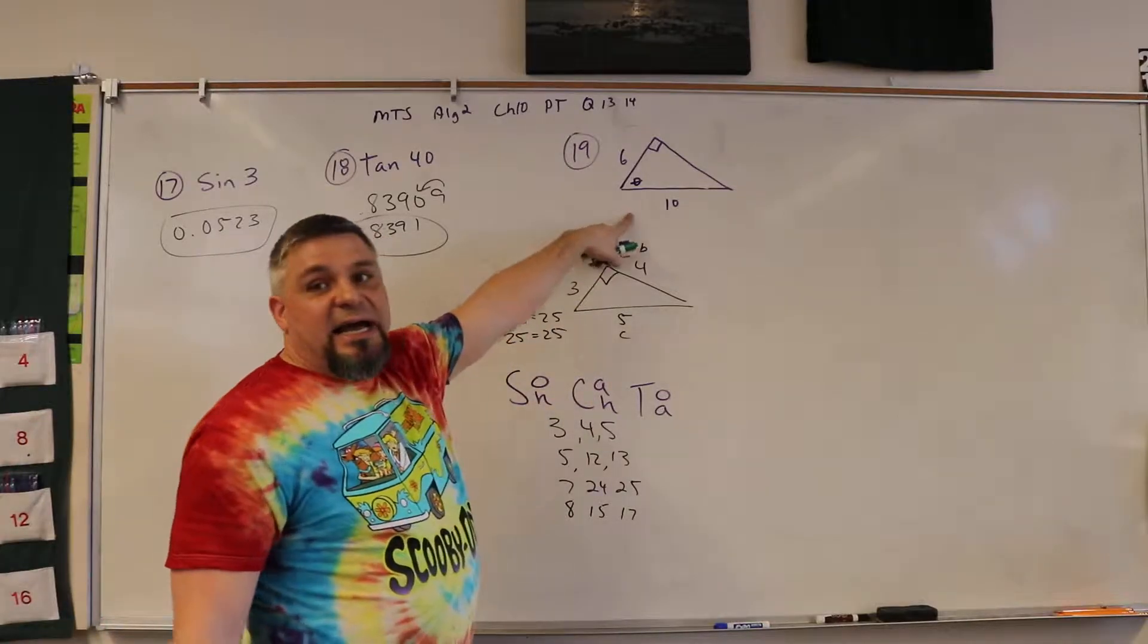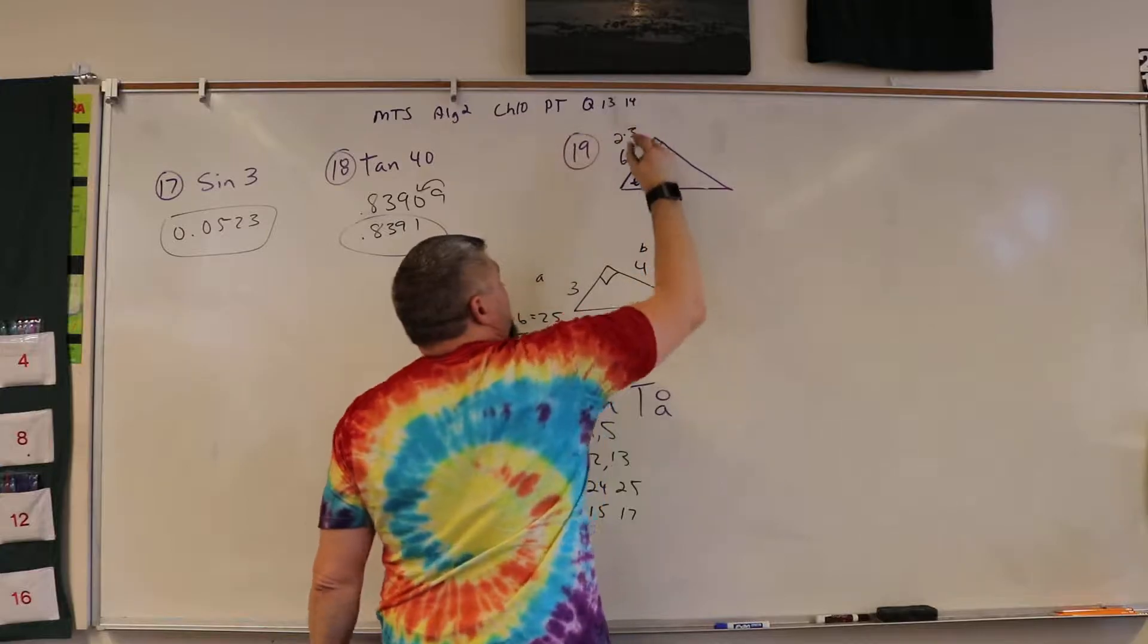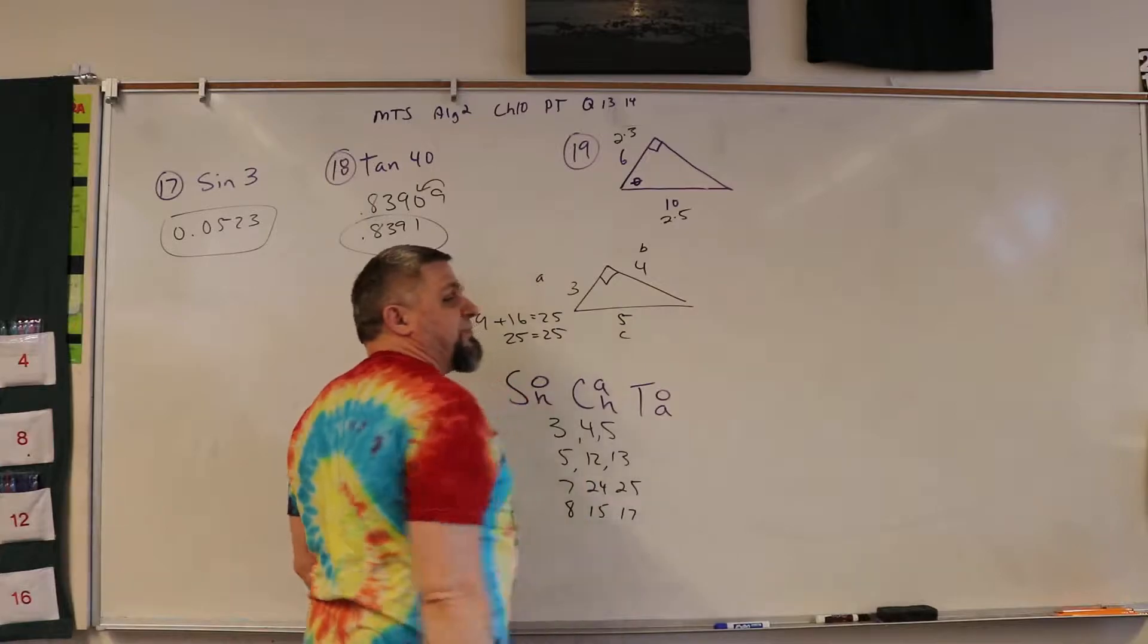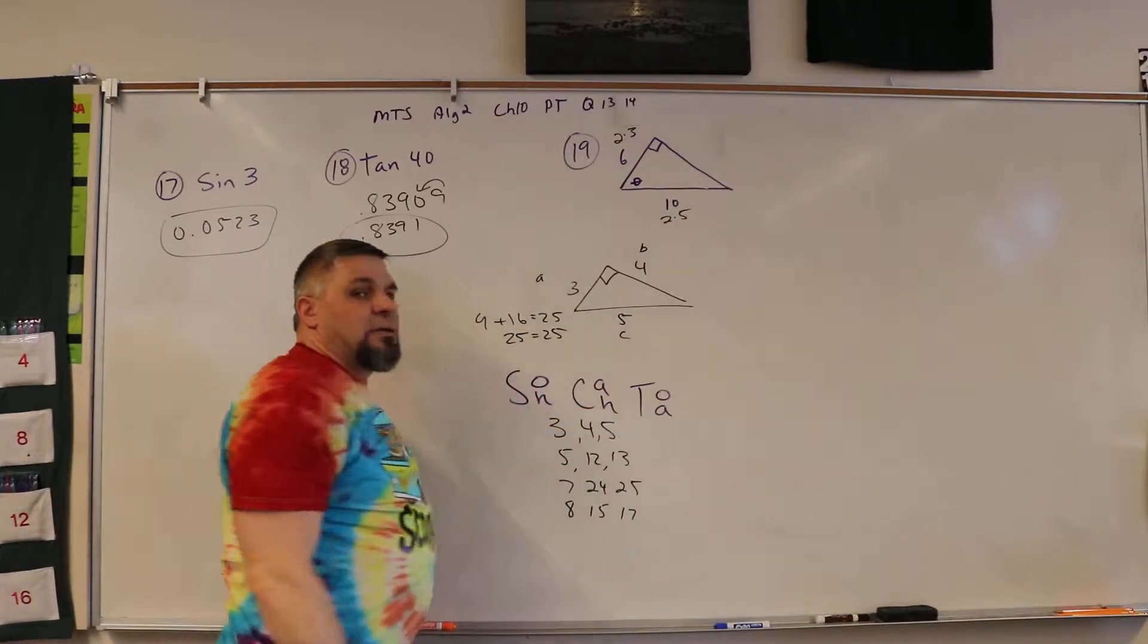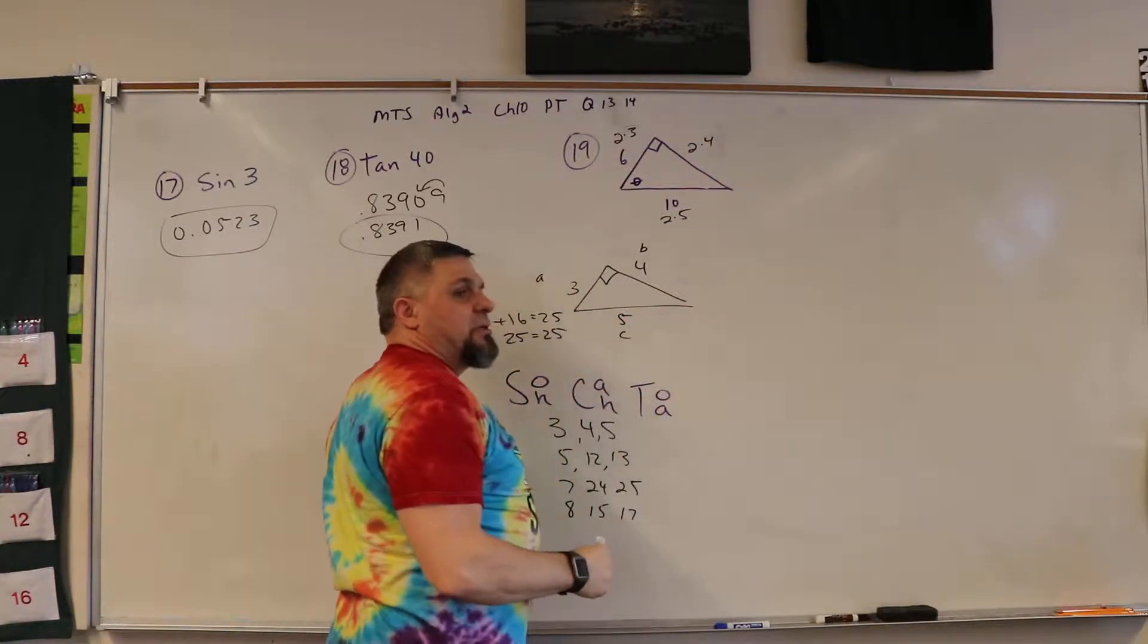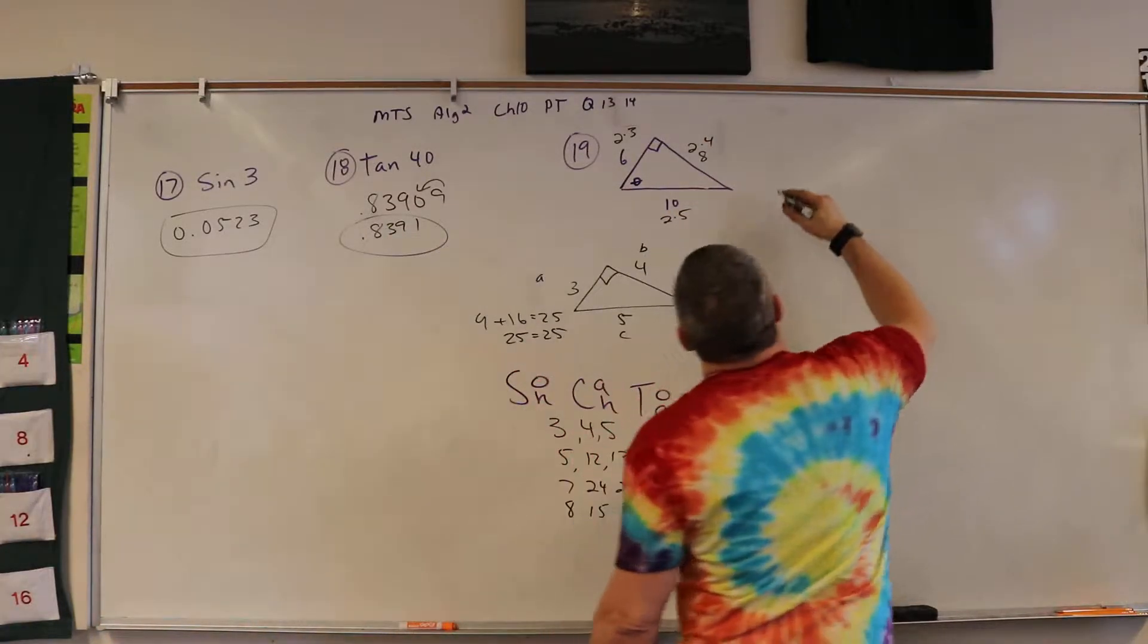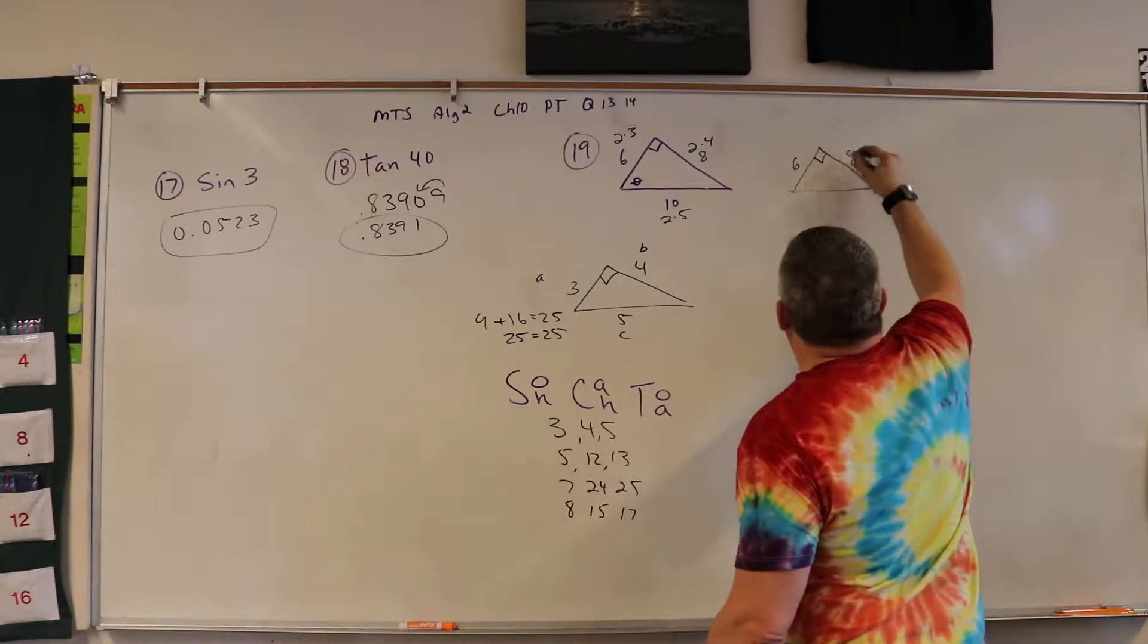If I look at this guy, I notice that that's 2 times 3, and I also notice that 10 is 2 times 5. So what do you think this side is going to be? 2 times 4. Yeah, 2 times 4, which is how much? 8. Okay? So we have this 6 and 8, right?